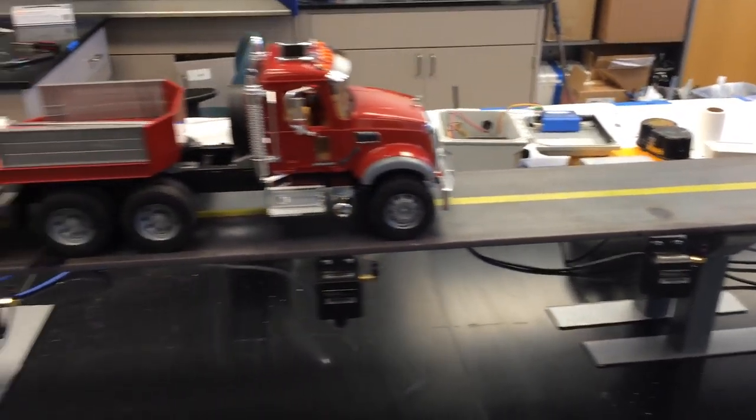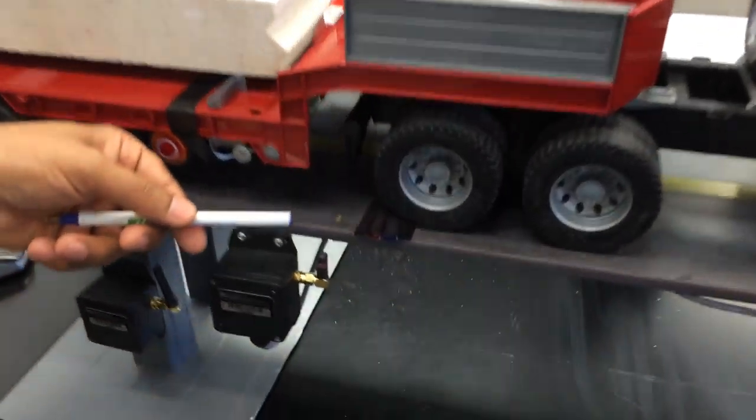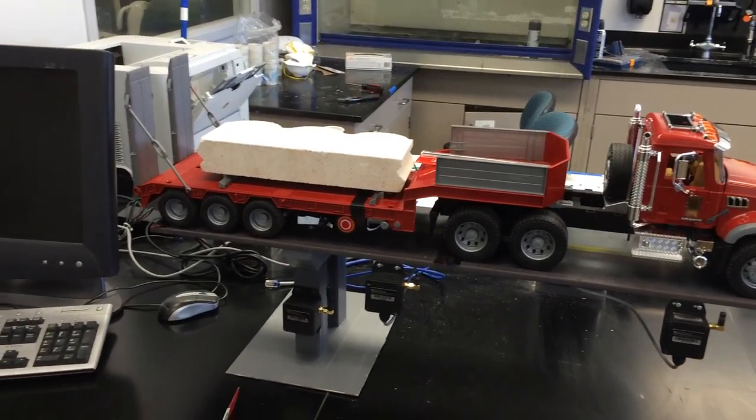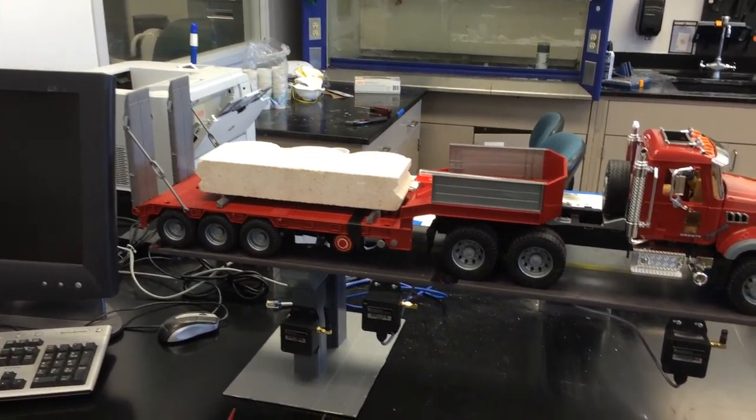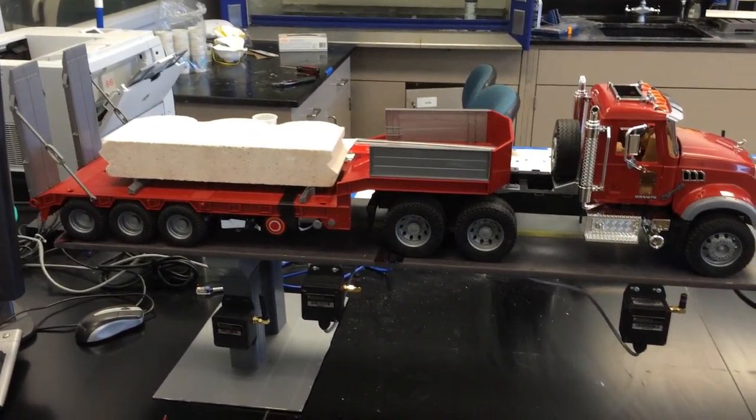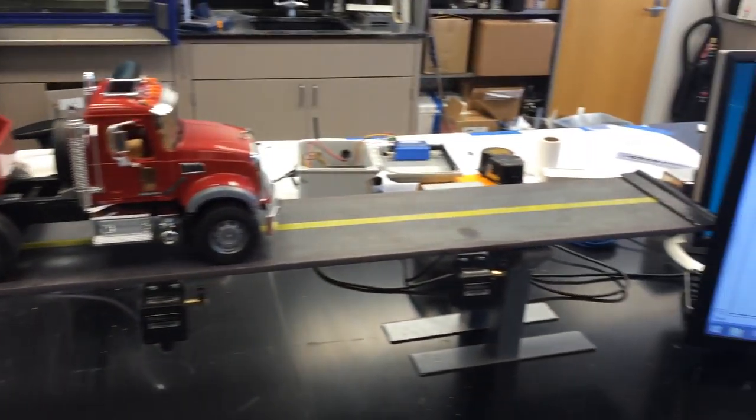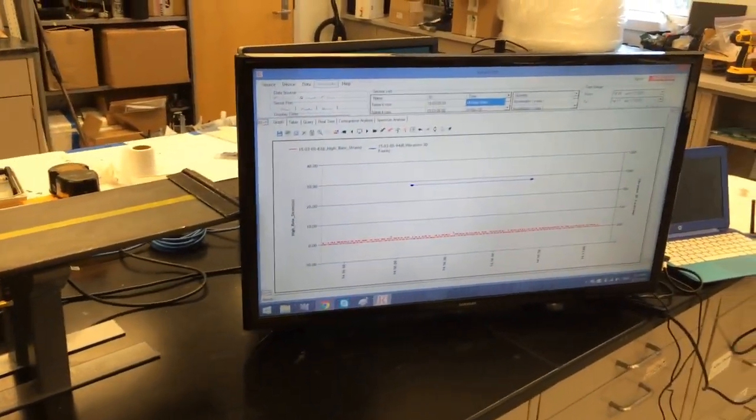To demo the vibration Sense Spot, a small speed bump has been created on the deck. When the truck passes over the bump, it produces a small magnitude bouncing in the steel deck which will be picked up by the vibration Sense Spot. The data from both Sense Spot Sensors is wirelessly transmitted where it can be received and displayed on the monitor here.